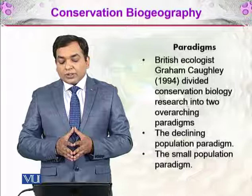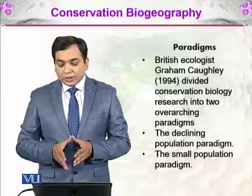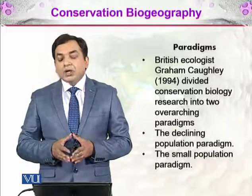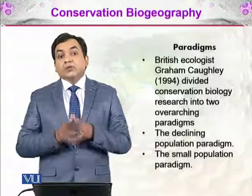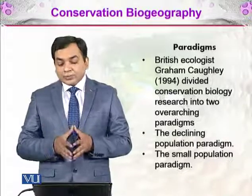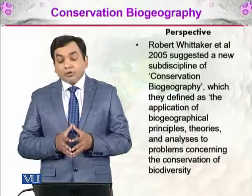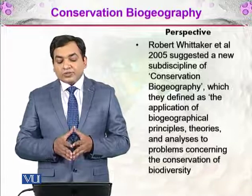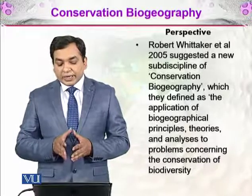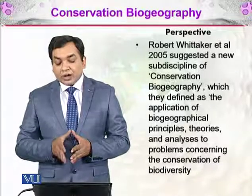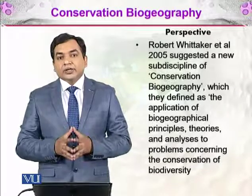British ecologist Graeme Caughley, in 1994, divided conservation biology research into two overarching paradigms: the declining population paradigm and the small population paradigm. Then, Robert Whittaker and colleagues in 2005 suggested a new sub-discipline of conservation biology, which they defined as the application of biogeographical principles, theories, and analyses to problems concerning the conservation of biodiversity — this new sub-discipline being conservation biogeography.